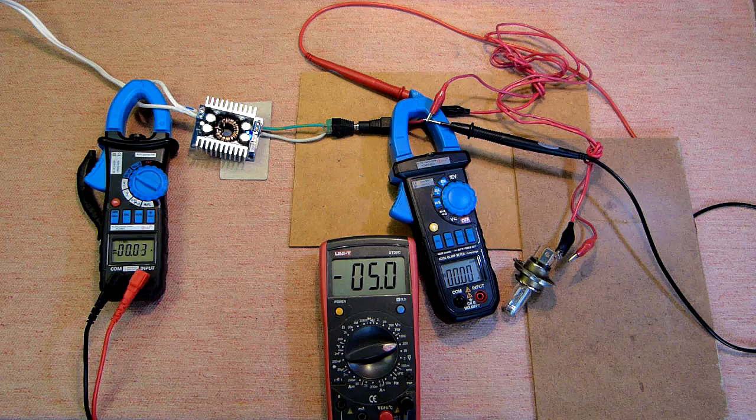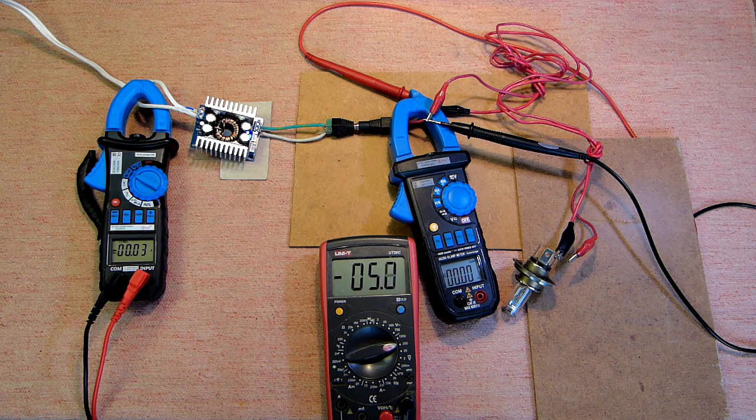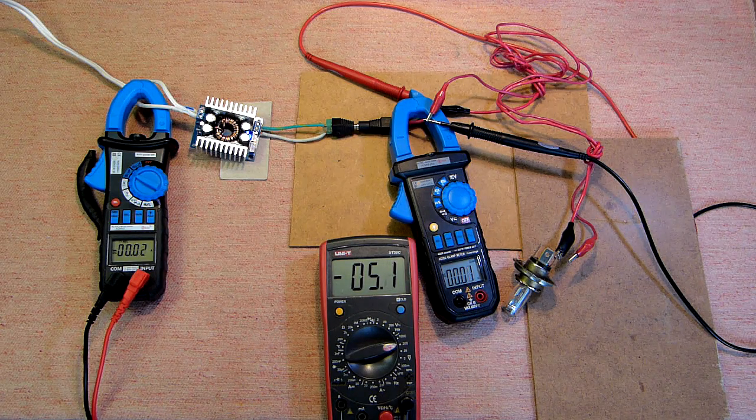So, we have 5 volts at the output, 12 volts from the power supply. Let's connect the car bulb.